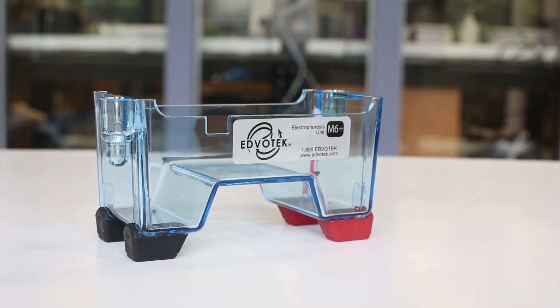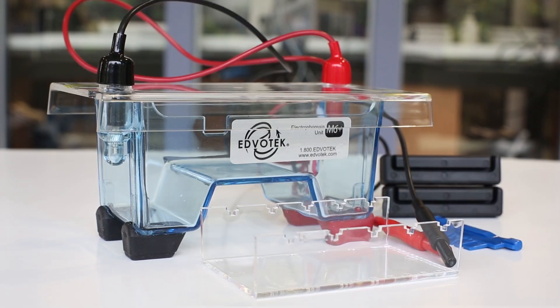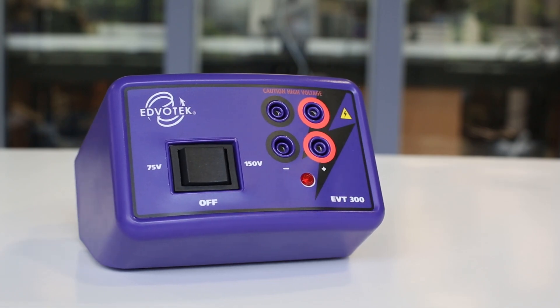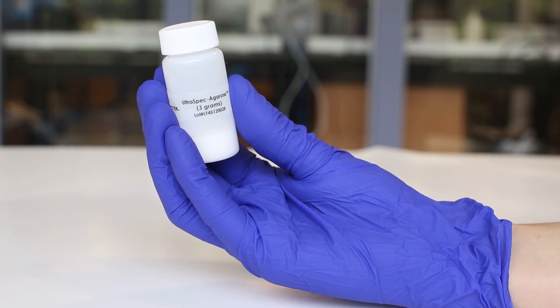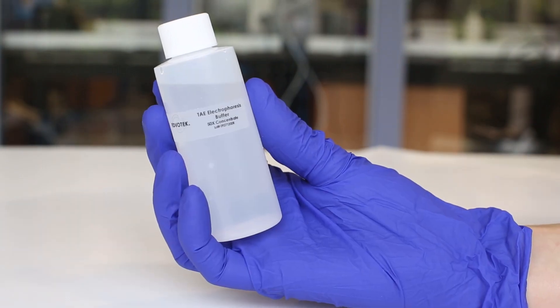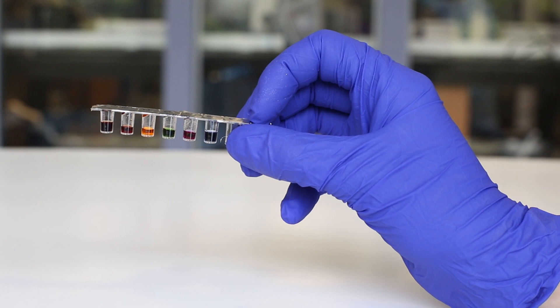For electrophoresis, you will need a horizontal electrophoresis apparatus, a DC power source, a micropipet or transfer pipet, Agarose powder, electrophoresis buffer, and samples for the experiment.